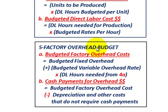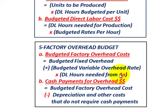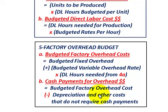For the factory overhead budget, number five: item A, budgeted factory overhead cost equals budgeted fixed overhead plus any budgeted variable overhead times direct labor hours needed from budget 4A. Cash payments for overhead equals budgeted factory overhead cost minus any depreciation and other costs that do not require cash payments, such as amortization.